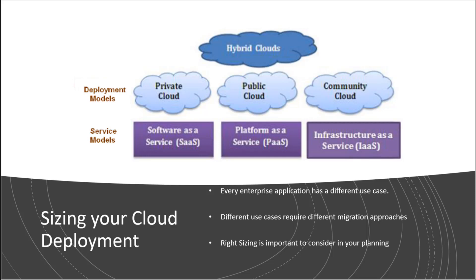We need to size our deployment appropriately, so every application will have a different use case. For example, you're going to likely need more object storage than you might need for relational type of storage. You may want to use Google Cloud Storage, or in AWS you might want to use S3. But we need to determine how much we're going to use, so we have an estimate.